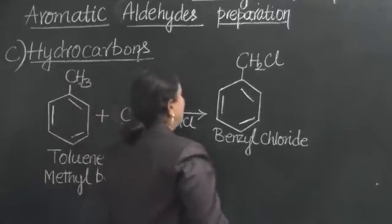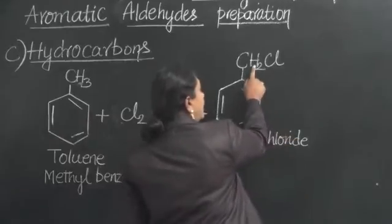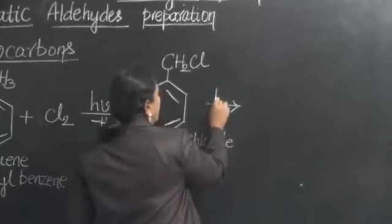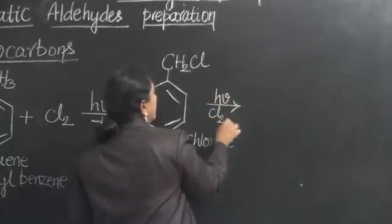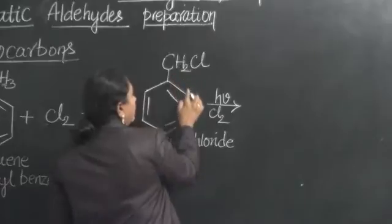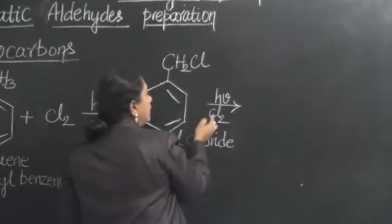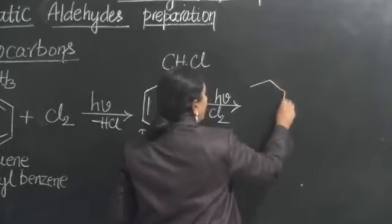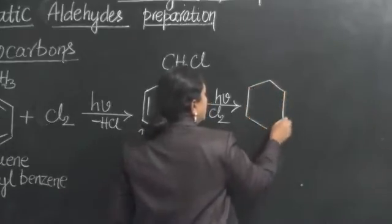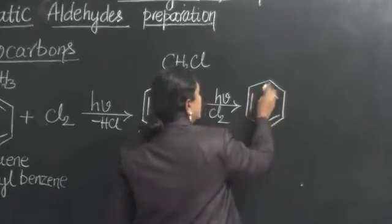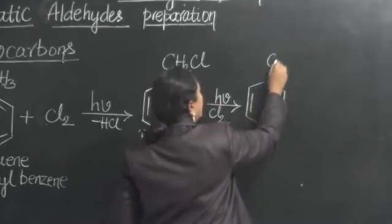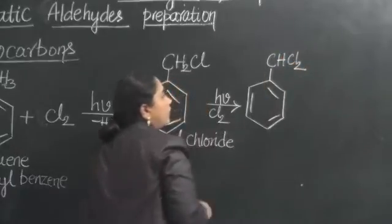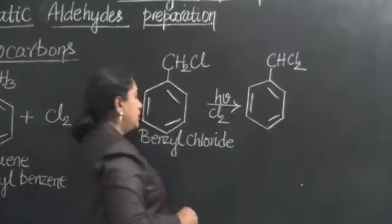This one more hydrogen will also undergo chlorination in presence of diffused sunlight. What happens now? One hydrogen comes out as HCl. In that place, one more Cl will take an attachment. No change is happening to the benzene ring. One should remember this. This is the absolutely reaction of the side chain. Now we land up in the formation of CHCl2.